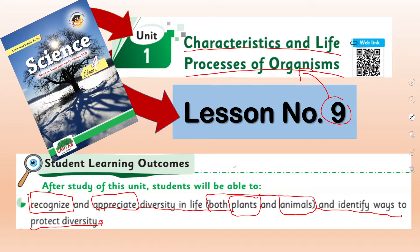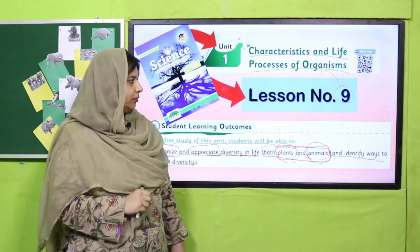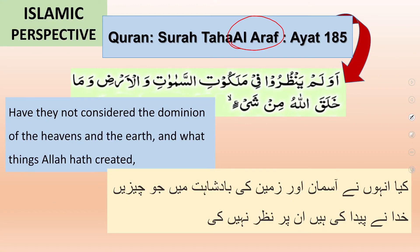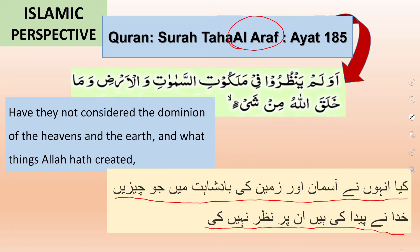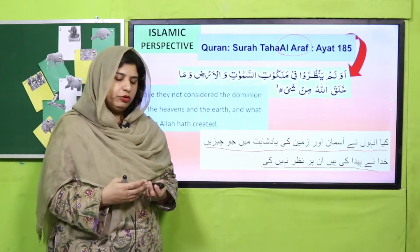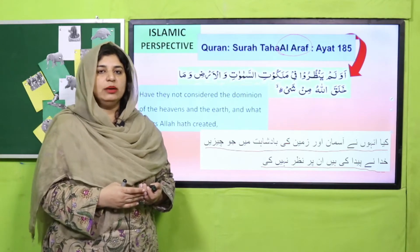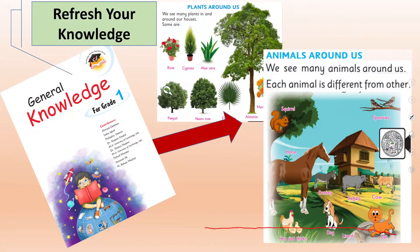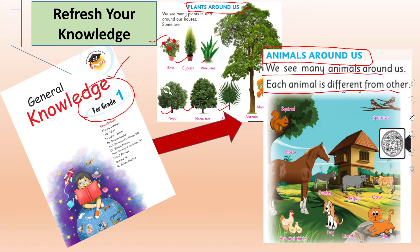After lesson number 9, we will focus on this part of the SLO: to recognize and appreciate diversity in life or living organisms — plants or animals. We will go through the phenomenon or the cases of how much diversified plants and animals are present around the world. Let us refresh our knowledge from your previous grades. In grade 1, you studied about many different kinds of plants around us, and also a wide variety of animals existing around us.